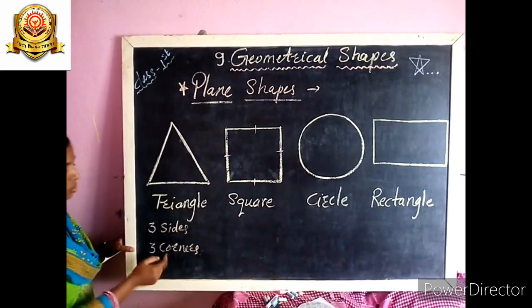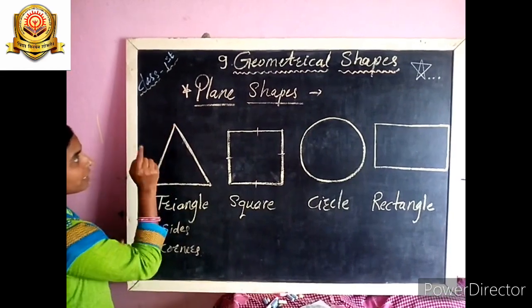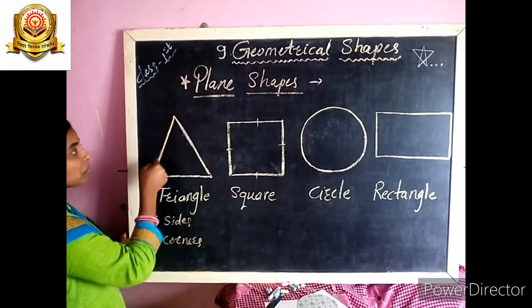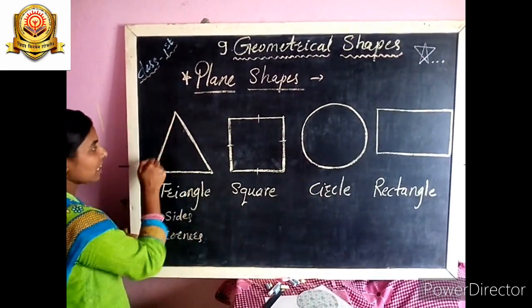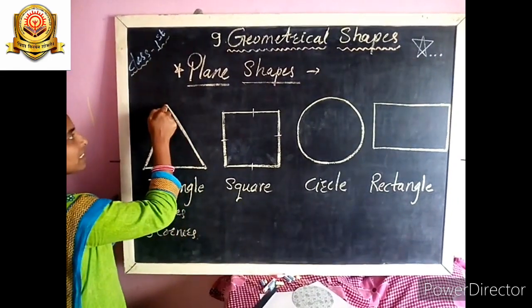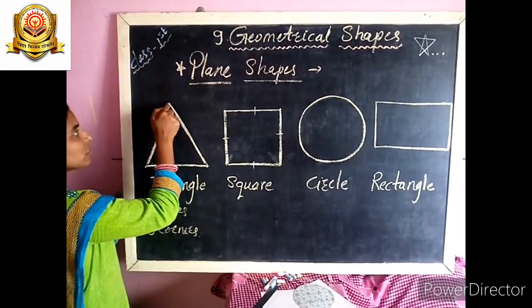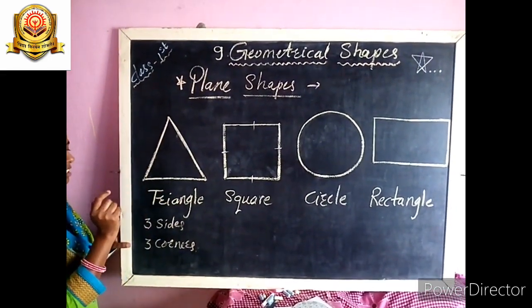Understood? Corners means this point — a point where two sides meet. This side and this side meet here, so this point is called a corner.